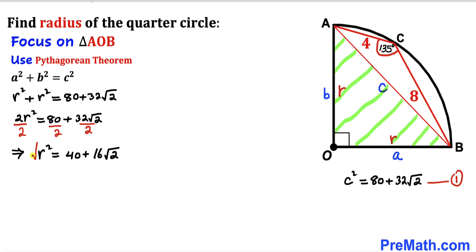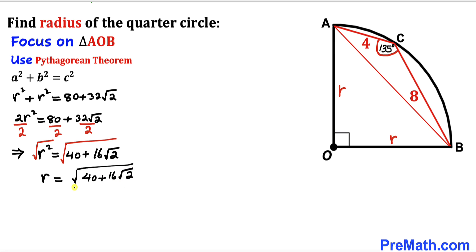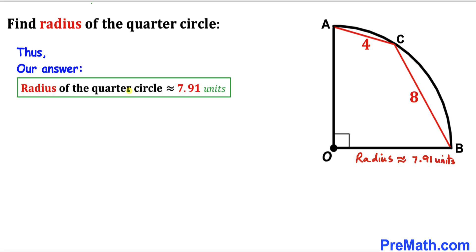Taking the square root of both sides, r = √(40 + 16√2). Simplifying the right-hand side, the radius r is approximately equal to 7.91 units. Therefore, the radius of this quarter circle is approximately 7.91 units — and that's our final answer.